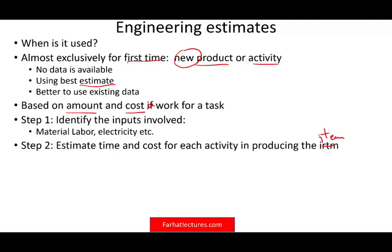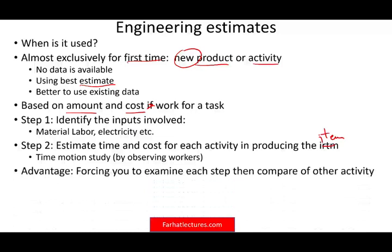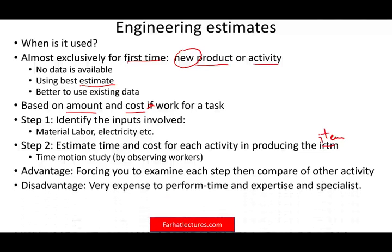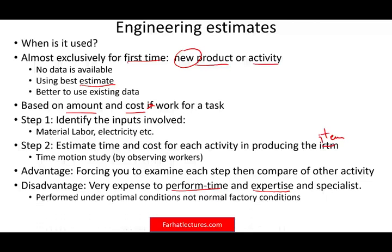We estimate costs using what's called a time-motion study, basically by observing workers. The advantage is it forces you to examine each step, helping you learn more about your process. The disadvantages are that it's very expensive, it takes time, and requires specialists. It's also performed under optimal conditions rather than normal factory conditions, so when actual production starts, results may differ.